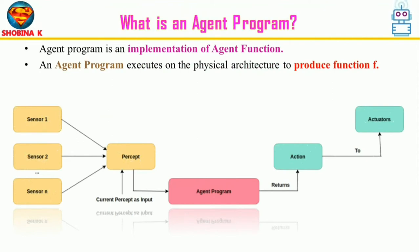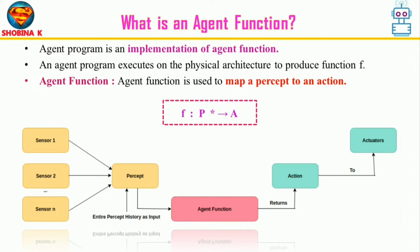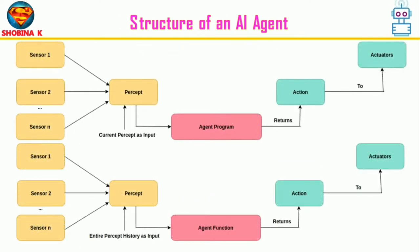The agent program takes the current percept as input from the sensors and returns an action to the actuators — nothing more is available from the environment at that moment. The agent analyzes the complete history of its percepts using an agent function that maps a sequence of percepts into an action. The key difference is: the agent program takes the current percept as input, whereas the agent function takes the entire percept history. The agent's perceptual sequence is the complete history of everything the agent has ever perceived.